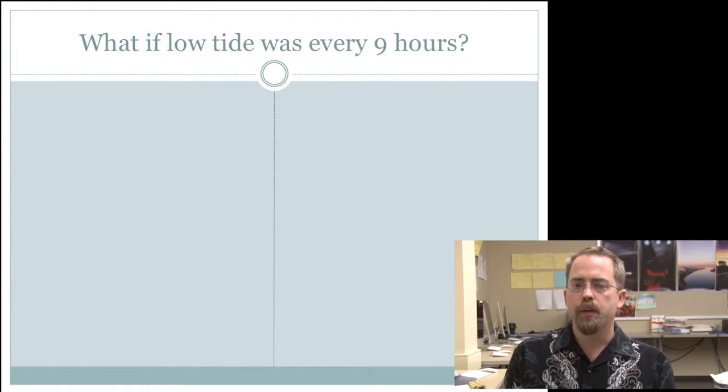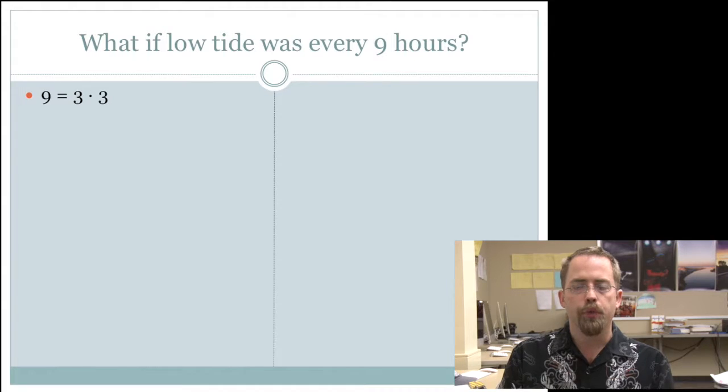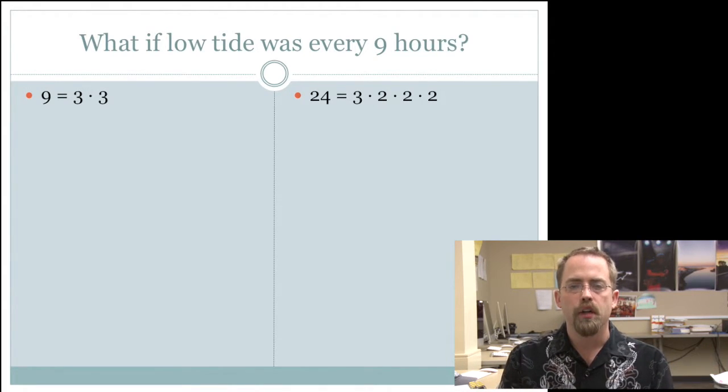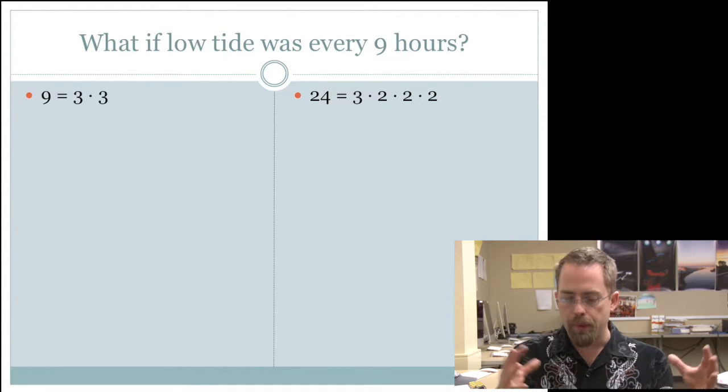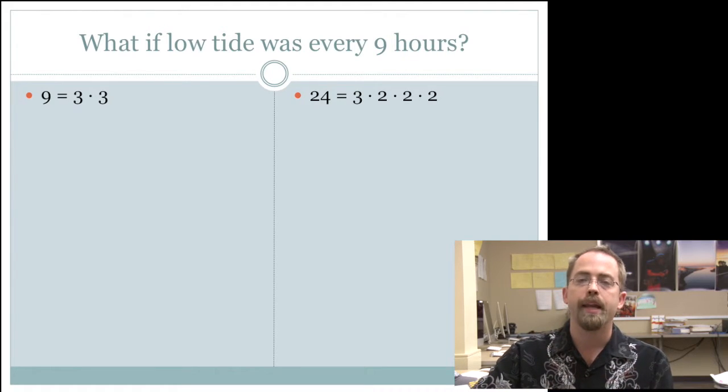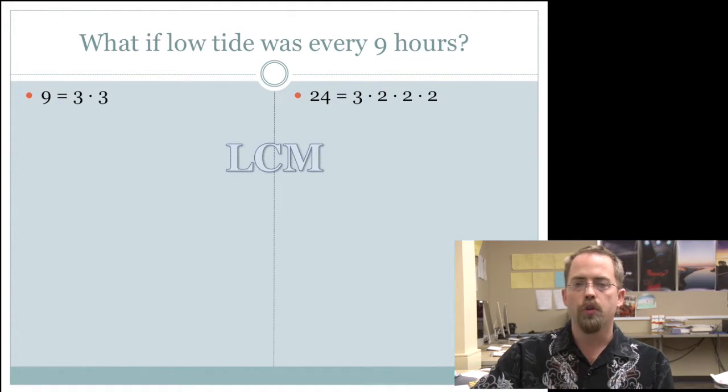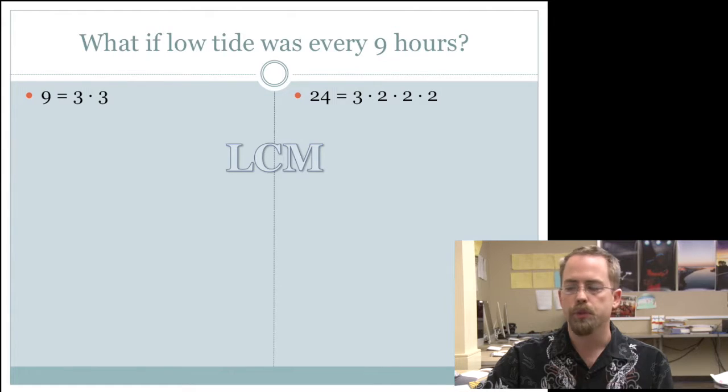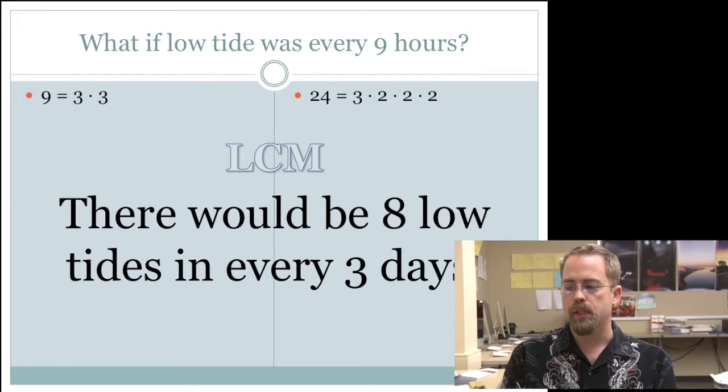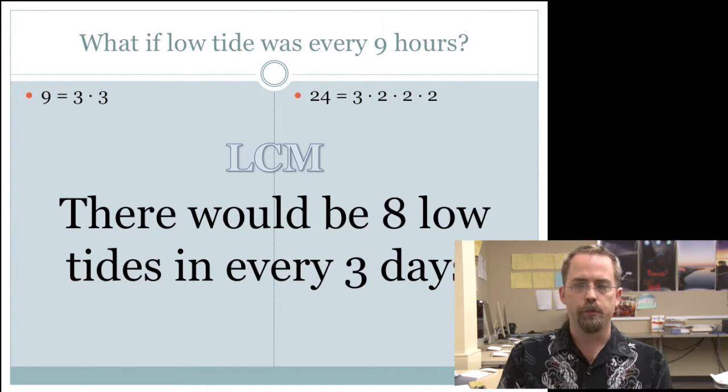What if low tide was every nine hours? Well, nine is made out of three and three, versus our lives that we live are based off of 24, which is three and two and two and two, or three times eight. That's the breakdown of how our two systems are made out of, multiplication speaking. So the least common multiple between those two is what you needed to be figuring out, and that would tell you that there would be eight low tides every three days.